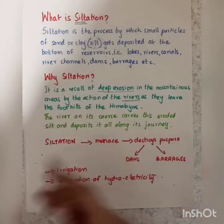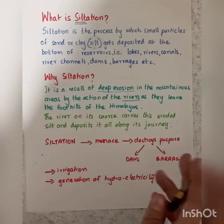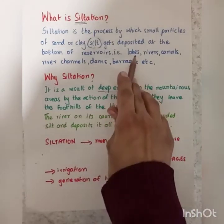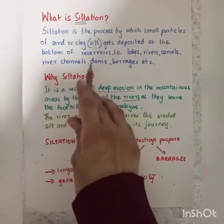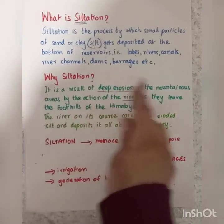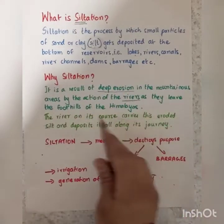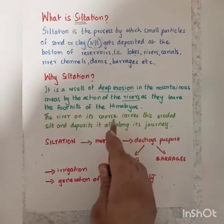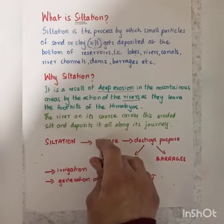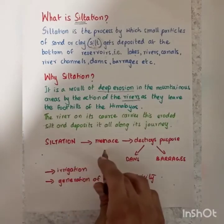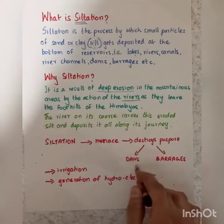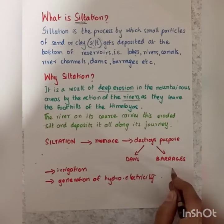The river flows through the plains of Punjab and Sindh, through canals, lakes, river channels, dams and barrages — all areas that are recipients of the silt which the river carries with it. Siltation is a menace, it's an evil which destroys the purpose of the construction of dams and barrages.